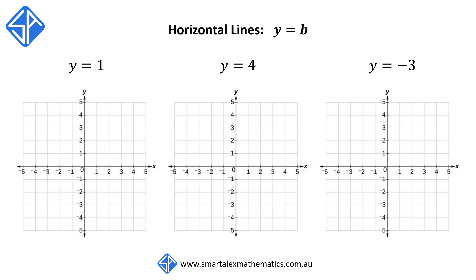The next type of line with one intercept is the horizontal line with equations of the form y is equal to b, where b is a constant. Our first example here is y is equal to 1, and this is a horizontal line through y is equal to 1.